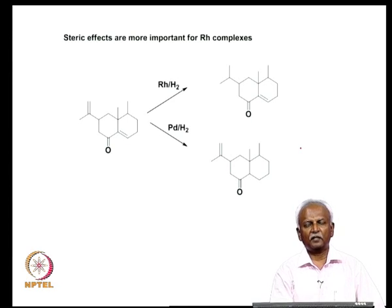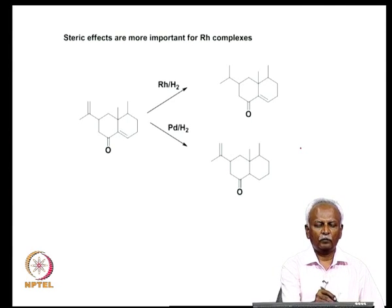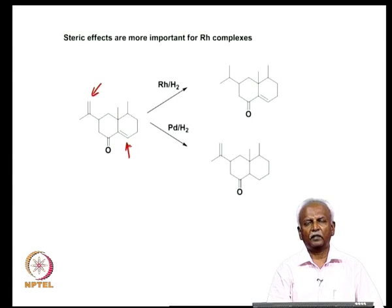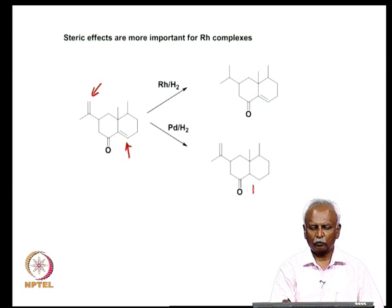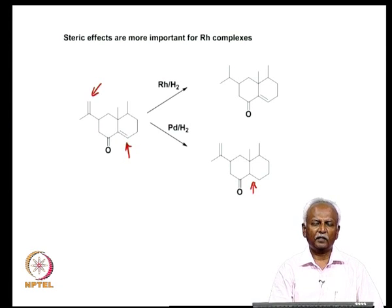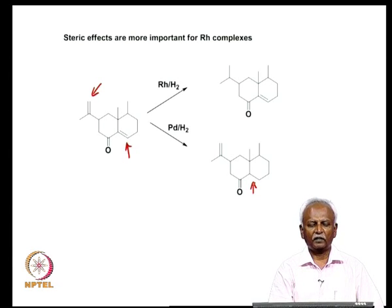This is a very useful catalyst because of its selectivity and it can be used for carrying out many complicated syntheses. Here is another example with an unhindered double bond and a trisubstituted double bond — the trisubstituted double bond is left unaffected during the reaction. If you use palladium and dihydrogen for the same reaction, the conjugated double bond is selectively hydrogenated, whereas rhodium, because of steric reasons, hydrogenates only at the terminal position where there is less hindrance.